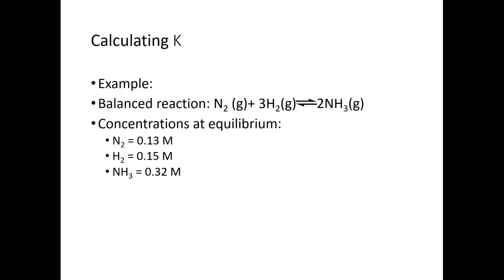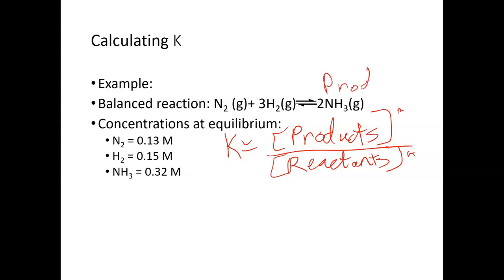So remember, K is going to be equal to our concentration of our products to exponent over our reactants to exponents. The products, remember, are on the right-hand side of the equation. They're what's produced. And our reactants are on the left side of the equation.